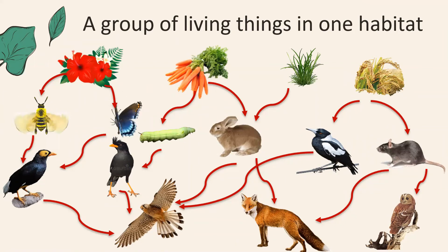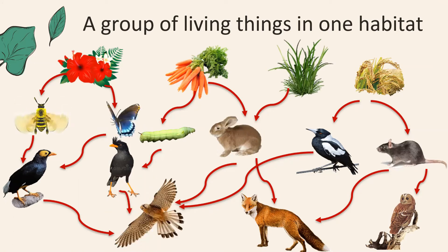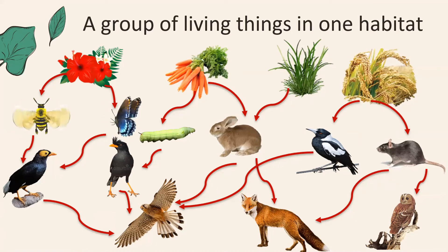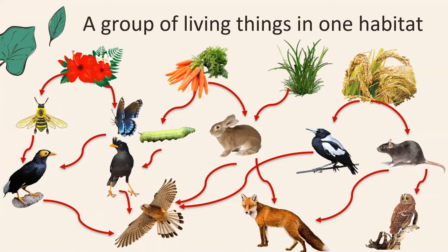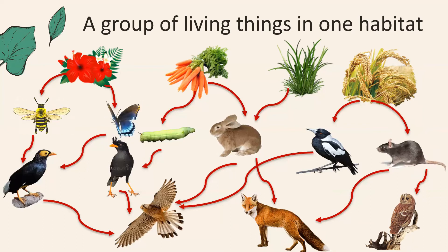We also have weeds eaten by the rabbit, which is eaten by the falcon — another food chain. The rabbit can also be eaten by the fox. The rice plant is eaten by the magpie, and the magpie is eaten by the falcon. The rice plant is also eaten by the rat, who is eaten by the fox, and the cat can also be eaten by the owl. These food chains are all interconnected.